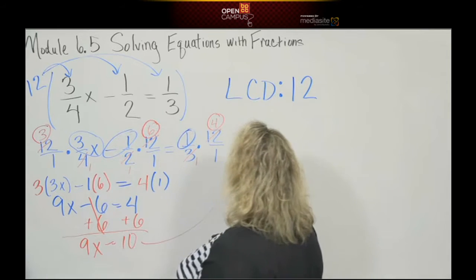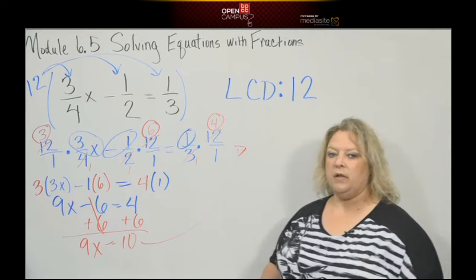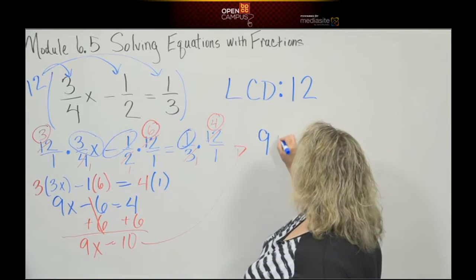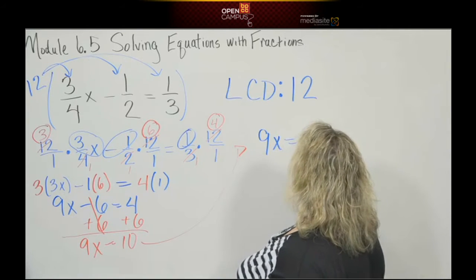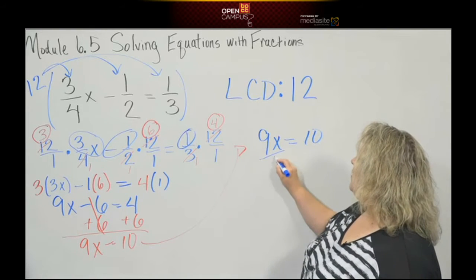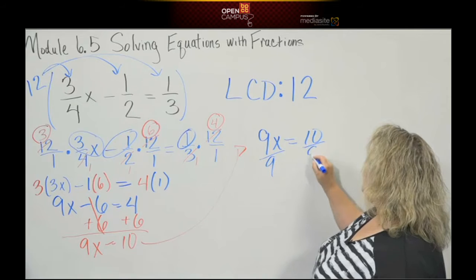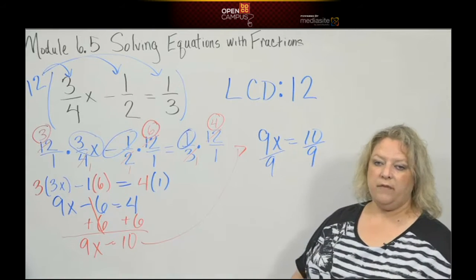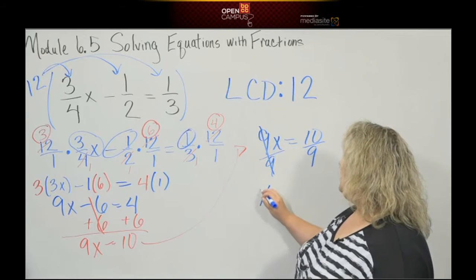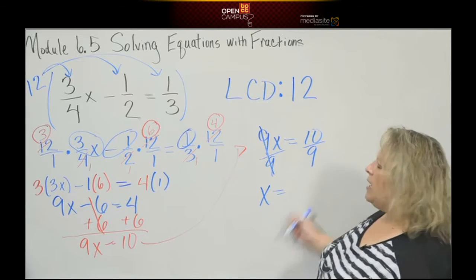And I'm going to rewrite this up here off to the side because I write really big. Okay, so I have nine x is equal to ten. And our last step is going to be to divide everything by nine, because you always want to get that x to have a one in front of it. So when I do division, I get nine divided by nine is one, ten over nine.